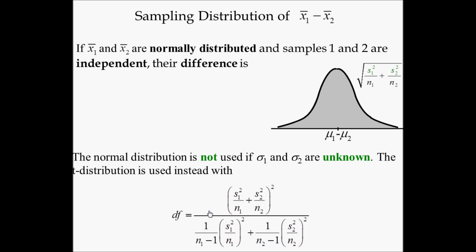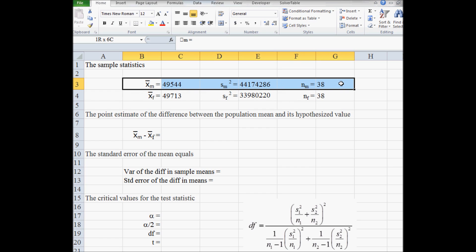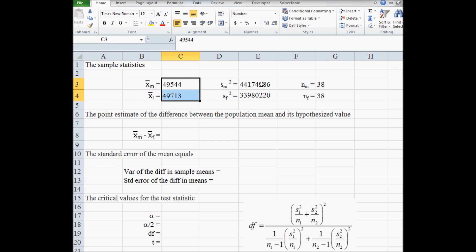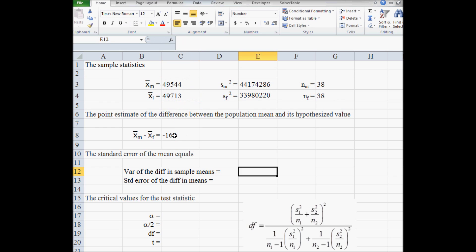I've already copied this equation into the Excel spreadsheet. Here is the spreadsheet we're going to use to make all the calculations for the Cengage problem. We have the male sample statistics and the female sample statistics — the sample means, sample variances, and sample sizes. The point estimate of the difference between the population means and its hypothesized value is the male mean minus the female mean.